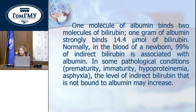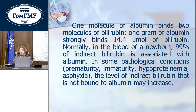One molecule of albumin binds two molecules of bilirubin. One gram of albumin strongly binds 14.4 µmol of bilirubin. Normally, in the blood of the newborn, 99% of indirect bilirubin is associated with albumin. In some pathological conditions, for example prematurity, hemolytic disease, hyperproteinemia, or asphyxia, the level of indirect bilirubin not bound to albumin may increase.